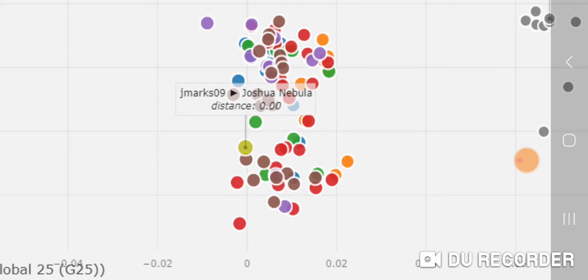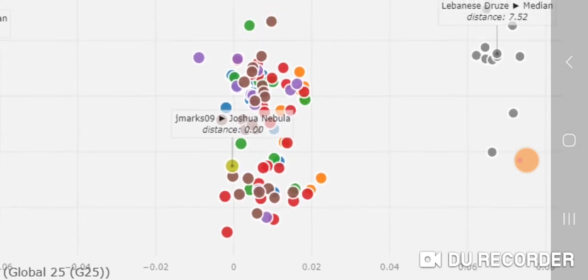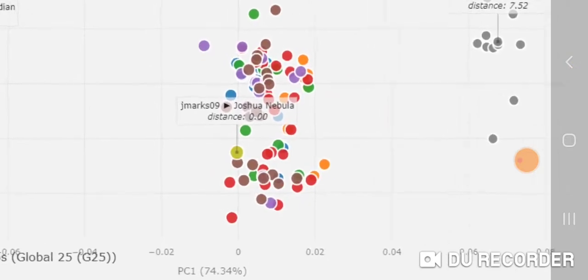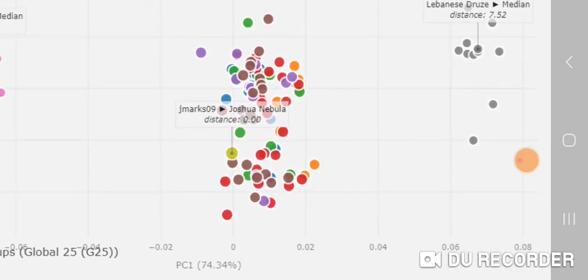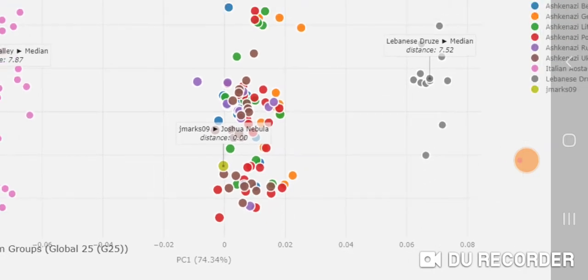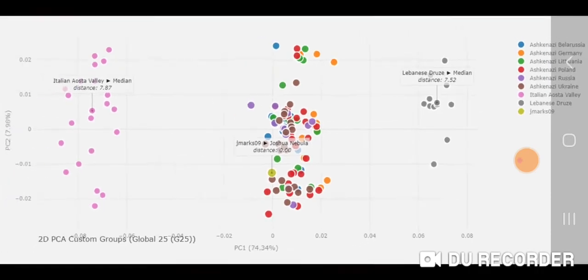There's me. I'm slightly euro-shifted, slightly shifted towards Europe, but still well within the Ashkenazi cluster. I'm a little bit euro-shifted but still very much within the Ashkenazi cluster. 100% Ashkenazi, but we're sort of a Middle Eastern-European mix. I think this PCA demonstrates that. I recommend playing around with the PCA yourself and seeing where you are.